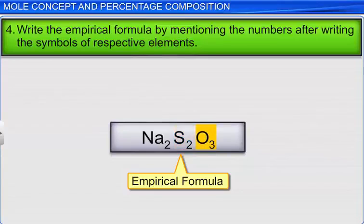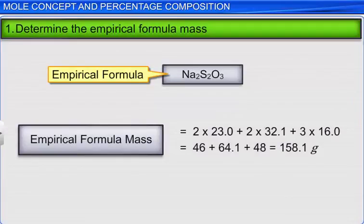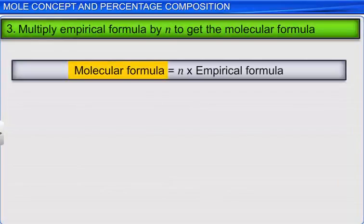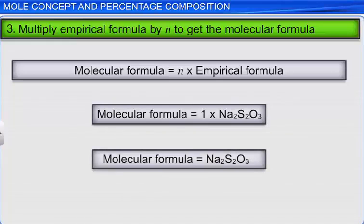Now, let's determine the molecular formula. First, calculate the empirical formula mass by adding the atomic masses of all atoms in the empirical formula, which is 158.1 grams. Dividing the molar mass by the empirical formula mass gives N = 1. Therefore, the molecular formula is determined by multiplying the empirical formula by N, and in this case the molecular formula is the same as the empirical formula: Na₂S₂O₃.